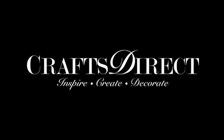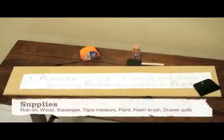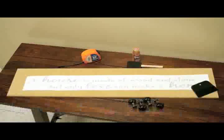Visit us online at CraftsDirect.com. Coat Hanger Vinyl Rub-On. Materials needed: Rub-On, Wood, Squeegee, Tape Measure, Paint, Foam Brush, and Drawer Poles.